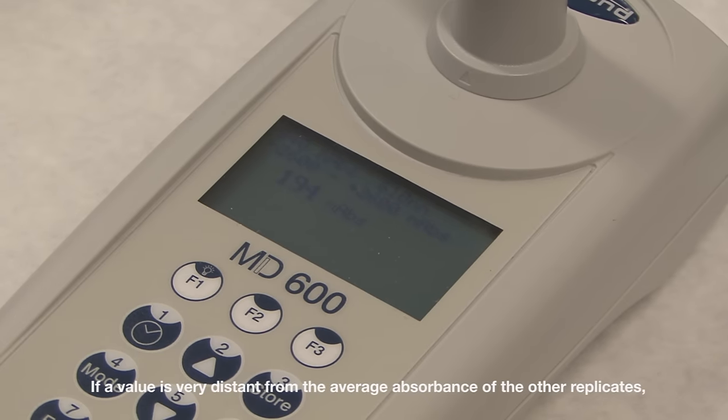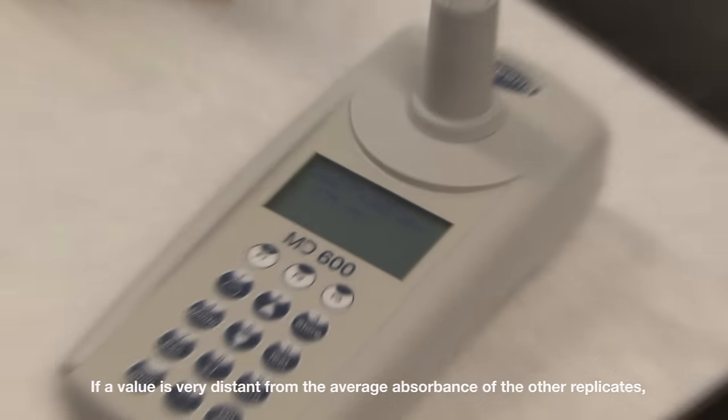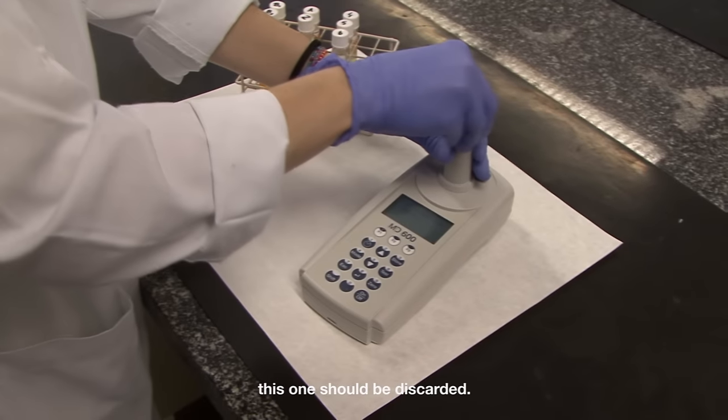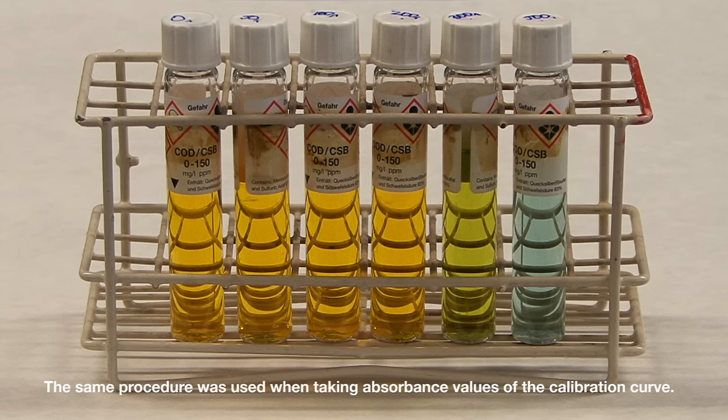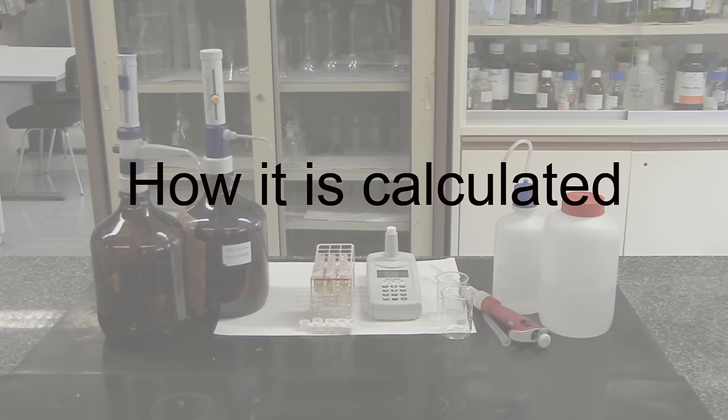If a value is very distant from the average absorbance of the other replicates, this one should be discarded. The same procedure was used when taking absorbance values of the calibration curve.